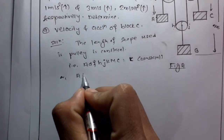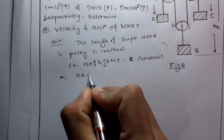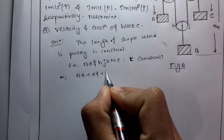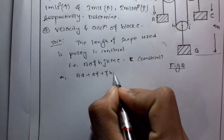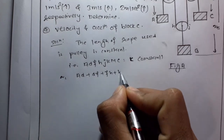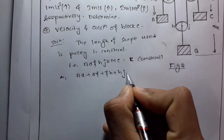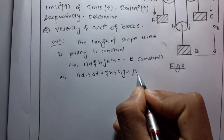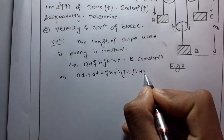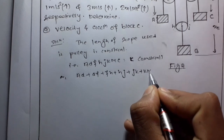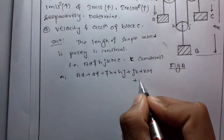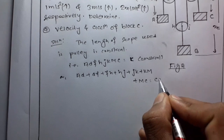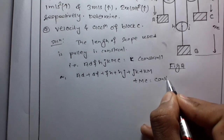So writing out the rope segments: AD + DF + FH + HJ + JK + KM + MC is equal to constant.